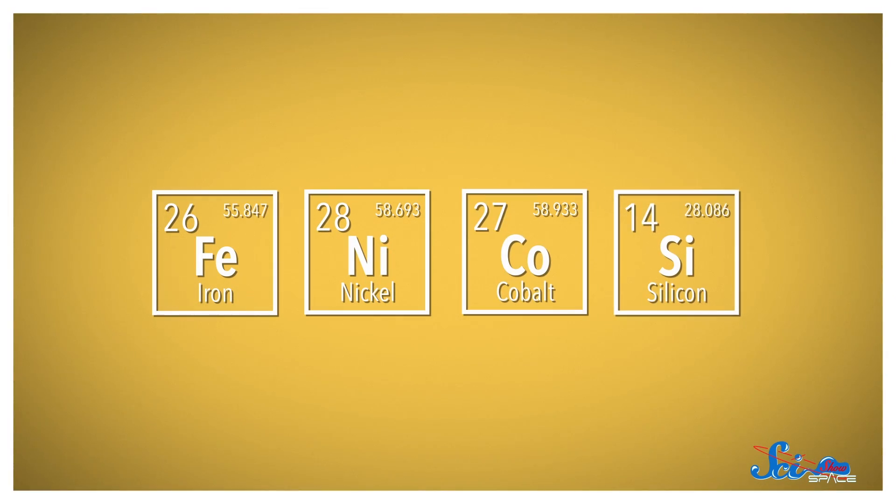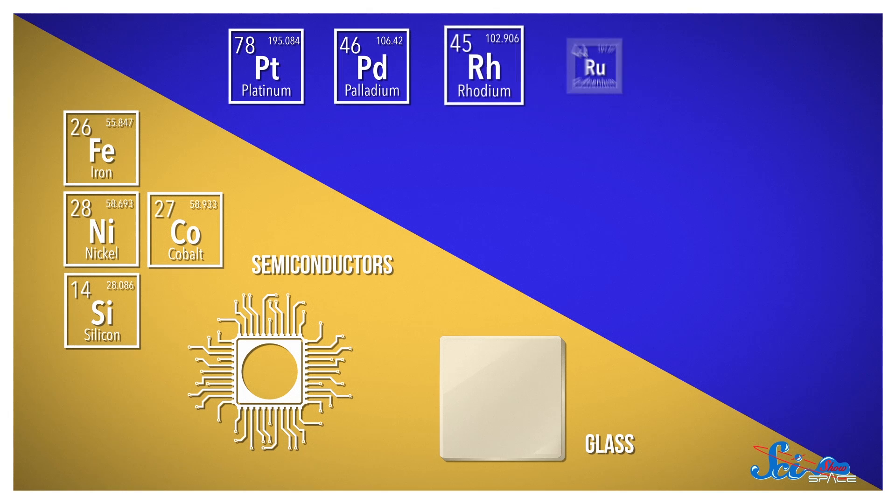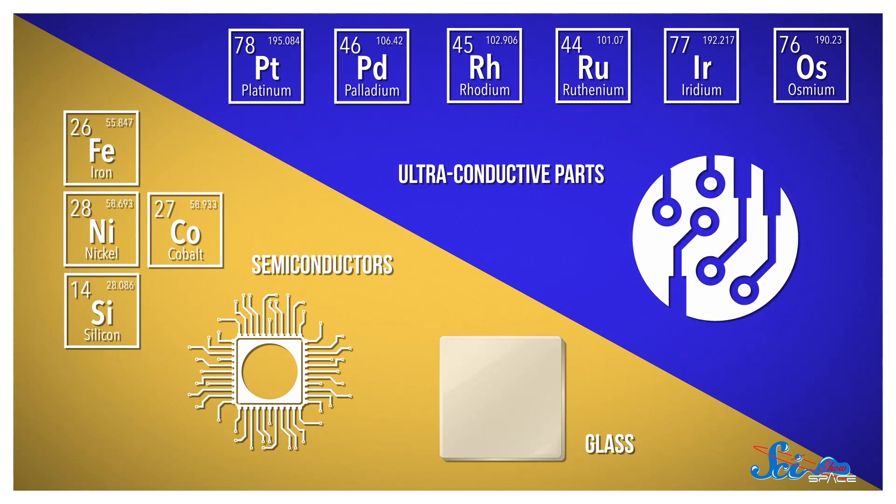Iron, nickel, cobalt, and silicon can make semiconductors and glass. And platinum-group metals can make ultraconductive parts that won't corrode.